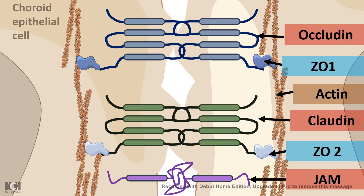Let's look at the molecular components of the tight junction in the context of the blood-CSF barrier — though these components are conserved across the blood-brain barrier, blood-CSF barrier, and any epithelial barrier. The key components are occludin and claudin. These are transmembrane proteins with four transmembrane regions and extracellular loop regions that intertwine with each other, stitching the membranes together. Important adapter proteins ZO1 and ZO2 connect claudin and occludin to the cytoskeletal element actin, ensuring further stability. Junction-associated molecules (JAMs) also help the two epithelial cells remain close enough that small molecules cannot even diffuse through.